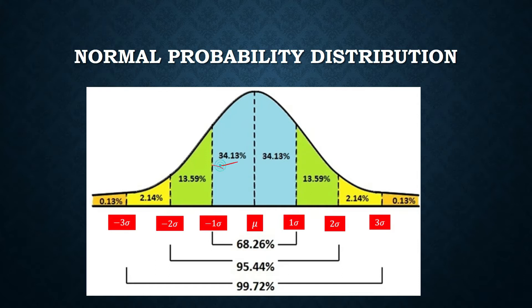These numbers — 34.13, 13.59, 2.14 — are supposed to tell us the probability of outcomes along the normal distribution curve.